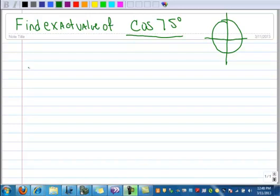Here's an example of a problem you're going to see a lot of in Chapter 4. Find the exact value of cosine of 75 degrees. The first thing you notice is that 75 degrees is not on your circle. At this point, we're only studying the cosine sum and cosine difference identities.